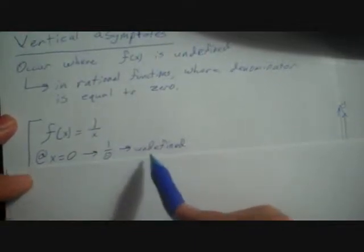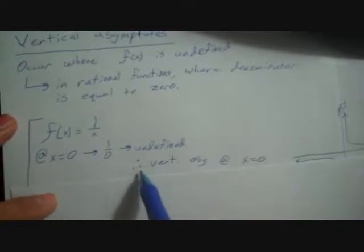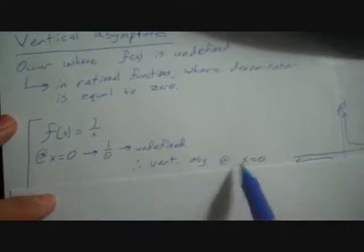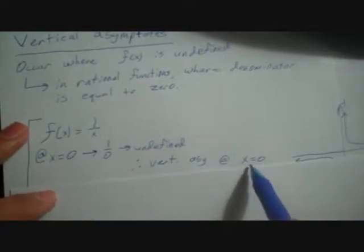Let's take for example the function f of x equals 1 over x. When x equals zero, we get one over zero, which is undefined. Therefore, we have a vertical asymptote at x equals zero.